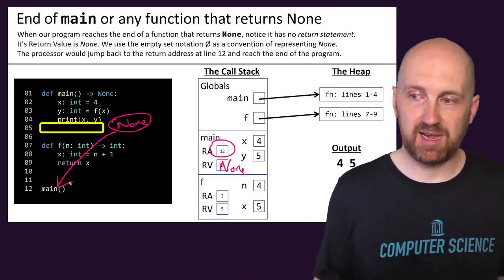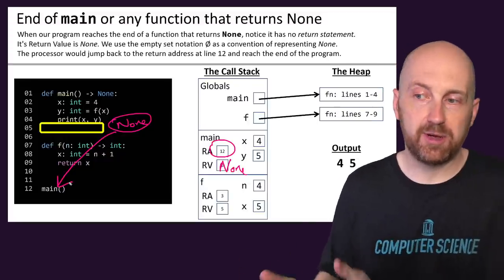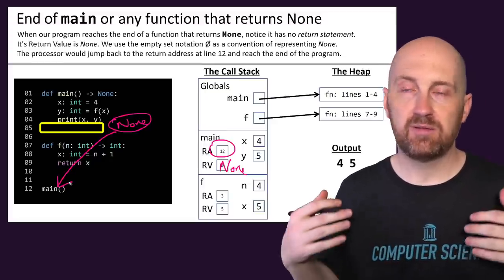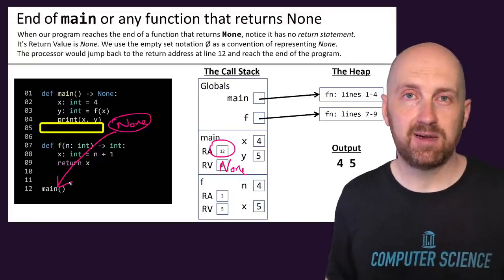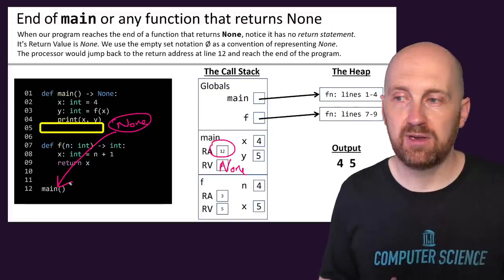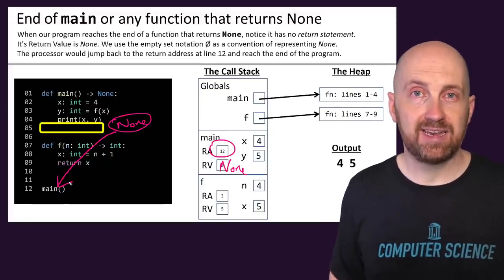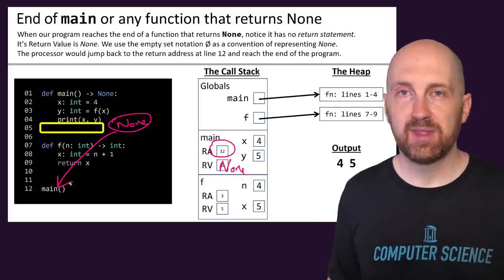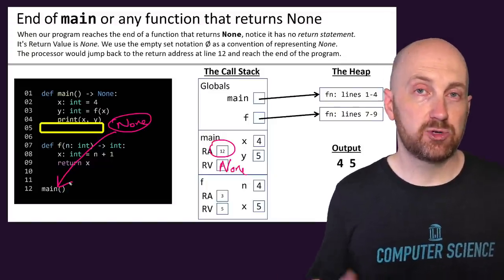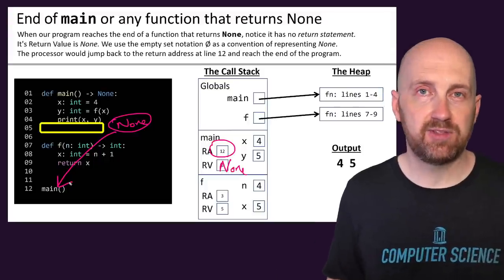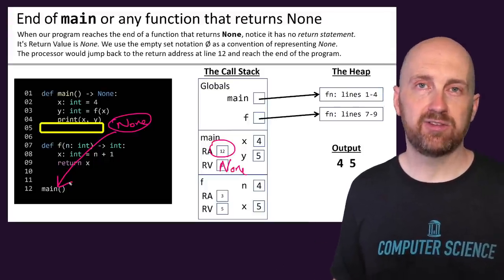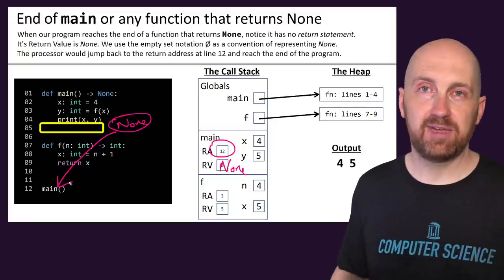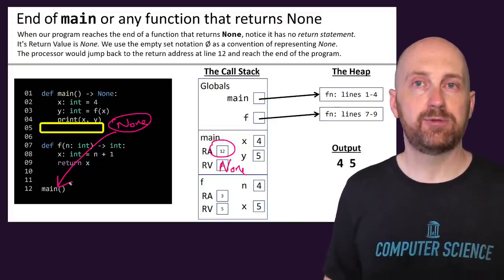If we had put a print statement or some other code after this call to main, that code would be evaluated at this point. Typically for structuring our programs, we put the definition of main at the top, the call to main at the bottom, and any functions that main depends on in between. This is a first look at environment diagrams and memory diagrams, and we're going to get a lot of practice through the semester. At first there are a number of rules to follow, but as you gain practice you'll become much more comfortable with how function calls work and the features that protect variables in different functions through the use of these frames.